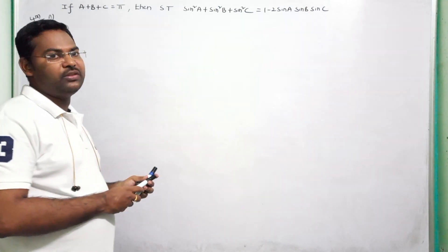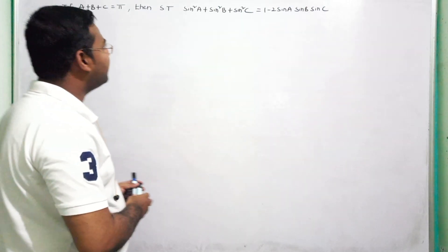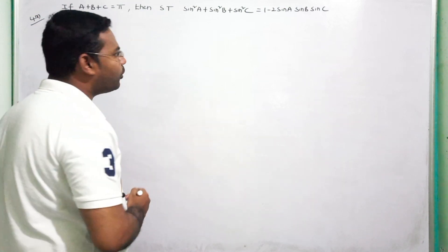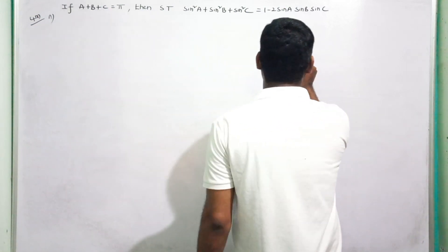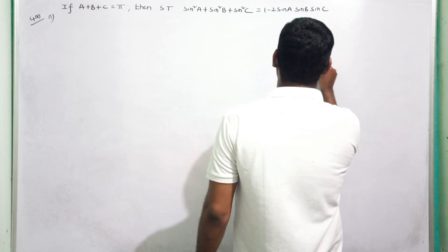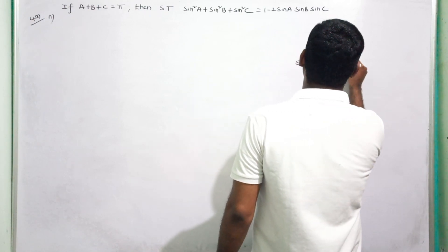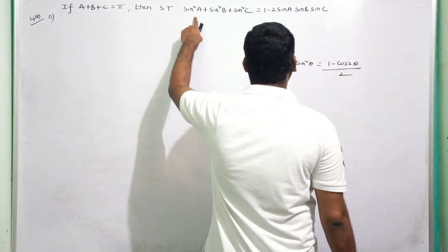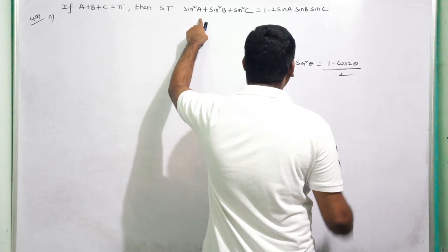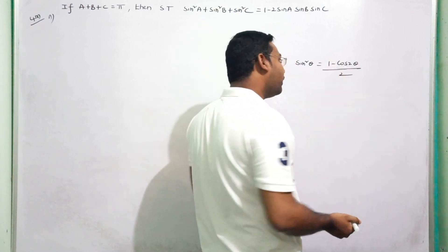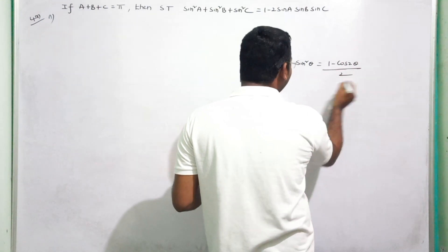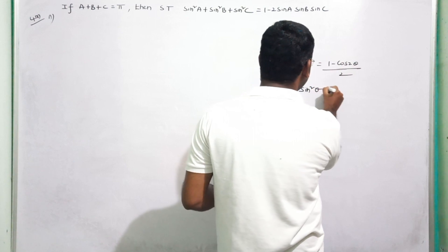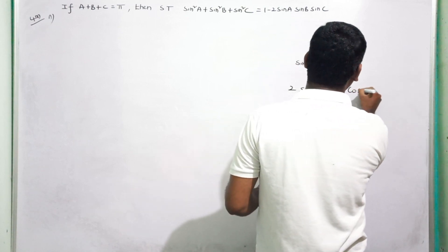We have the left-hand side to show and the right-hand side to prove. The formula for sin²θ is (1 minus cos2θ) divided by 2, so 2 sin²θ equals 1 minus cos2θ. We will use this formula to expand the left-hand side.